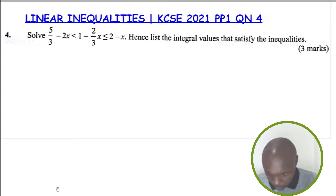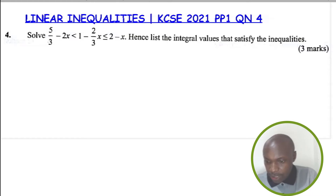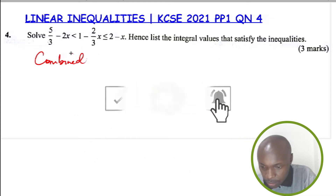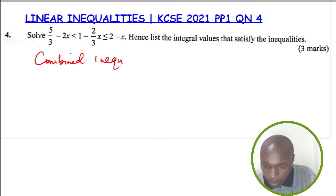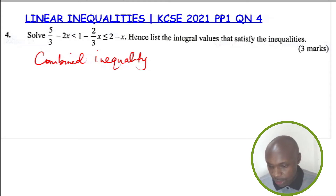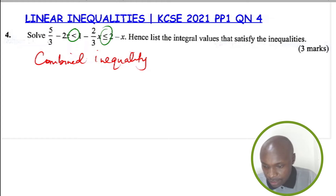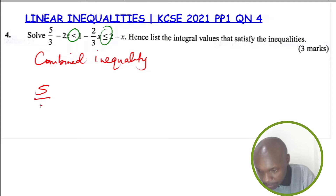To evaluate this inequality, as you can see, this is a combined inequality. It is a combined inequality, and therefore we have to extract two inequalities from it. You can see it has got two inequality signs — the first one is here, less than, and we have another one here. How do we extract this?